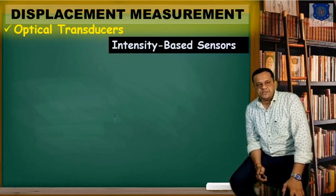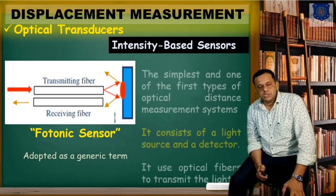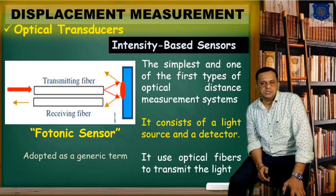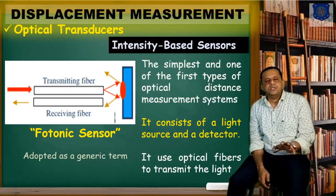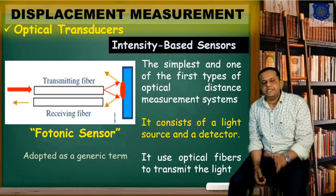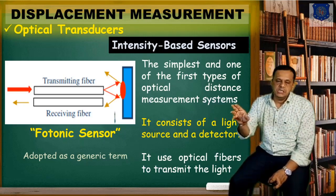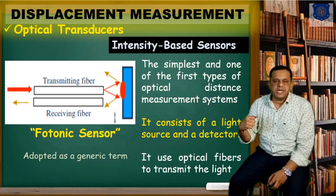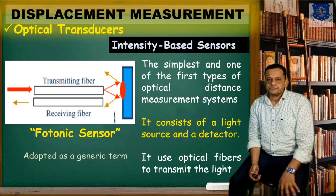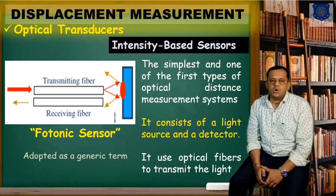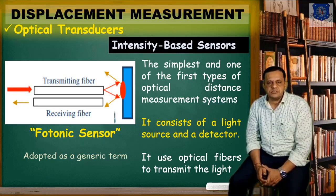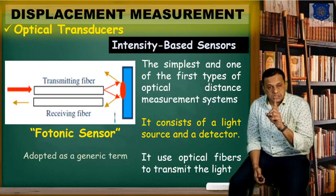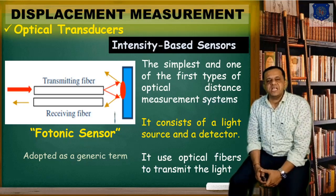Let us start with the intensity-based sensor. The generic commercial term for this type is a photonic sensor. It uses a transmitting fiber and a measuring fiber. The fundamental principle is that you send a light ray to the object, the object reflects the ray, it is received by a receiver, and we measure the distance. This is the simplest form of all optical measurement systems, using optical fibers to transmit the light.